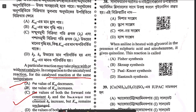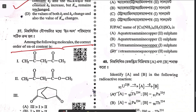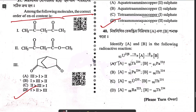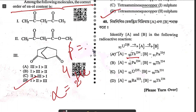Question thirty-eight: when aniline is heated with glycerol in the presence of sulfuric acid and nitrobenzene, it gives quinoline — this is Skraup synthesis. Question thirty-nine: the name of the coordination complex is tetraamine aqua copper(II) sulfate. Question forty — radioactivity: identify A and B. Uranium-238 emits α (⁴₂He), giving mass 234 and atomic number 90, then β decay (−₁e⁰). So the answer is option A.